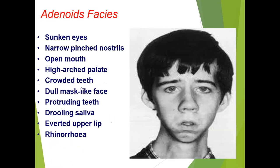Adenoid facies is very typical. Children with adenoid hypertrophy who breathe through their mouth for a long period develop sunken eyes, narrow pinched nostrils, open mouth, high arched palate, crowded teeth, dull mask-like face, protruding teeth, drooling saliva, averted upper lip, and rhinorrhea.